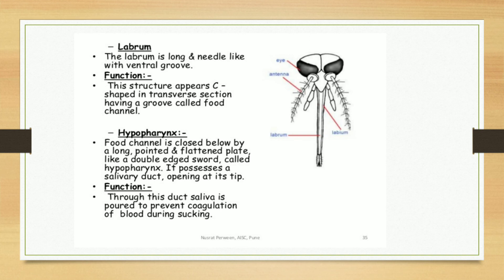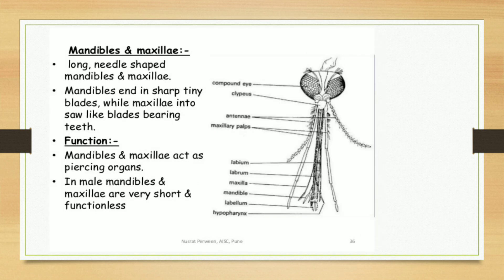Then mandibles and maxillae. Long and needle-shaped mandibles are present, and also long and needle-shaped maxillae are present. Mandibles end in sharp tiny blades, while maxillae end in saw-like blades bearing teeth. The function of these mandibles and maxillae is that they act as piercing organs. In males, mandibles and maxillae are very short and functionless.